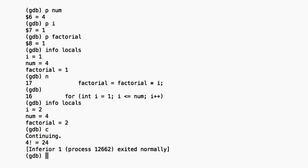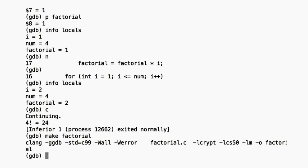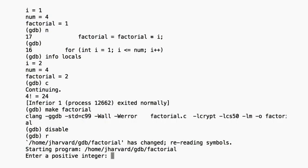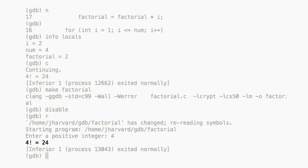Rather than quit out of GDB, we'll use another terminal tab to fix the code. Going back to our GDB tab, we now need to recompile our executable. One of the best things about GDB is that you don't need to leave GDB to run make. So that we don't keep hitting the old breakpoints, let's disable them with the — you guessed it — disable command. This will disable all of our breakpoints. Now we can restart the program with r and make sure everything's okay. Factorial of 4 prints out 24, just like we thought.